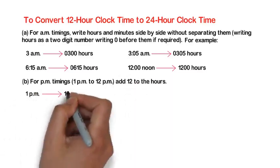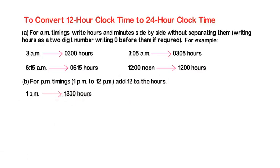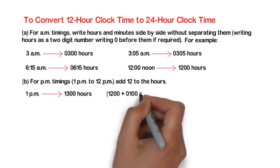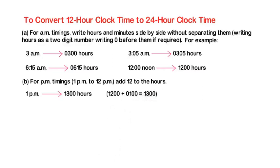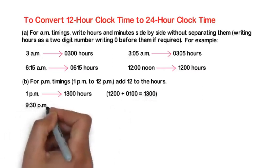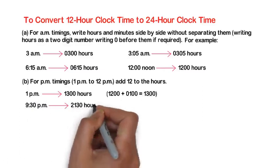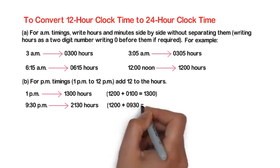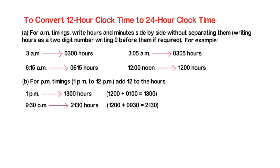1 p.m. 1300 hours, 1200 plus 0100 equal to 1300. 9:30 p.m. 2130 hours, 1200 plus 0930 equal to 2130.